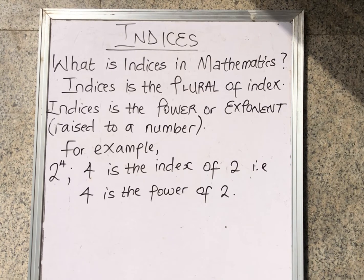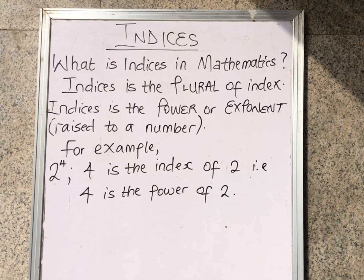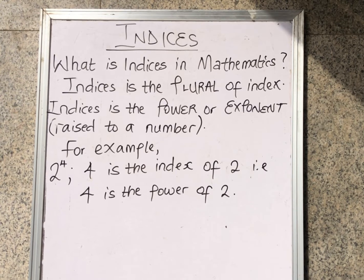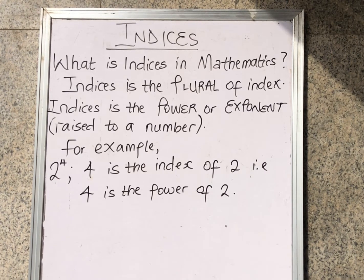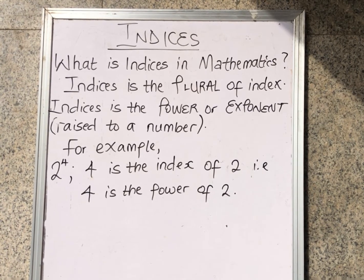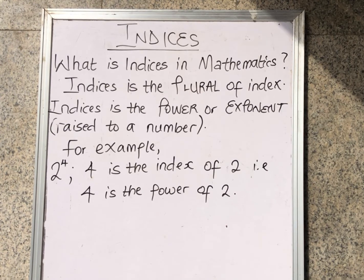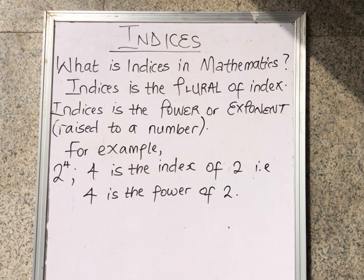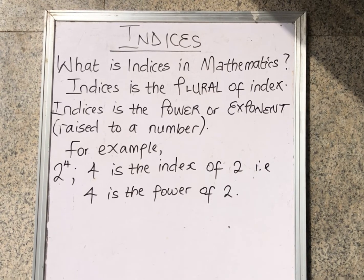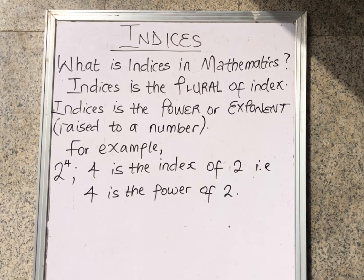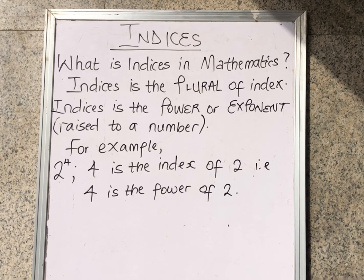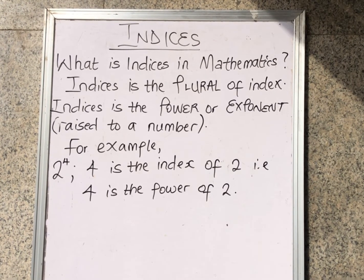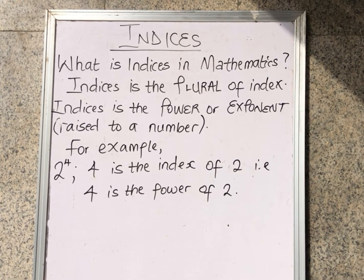Multiply 2 four times: 2 times 2 times 2 times 2. Well, 2 times 2 times 2 times 2 will give you 16. So well done to the person that got 16. Wherever you see a number raised to another number, you know that that is indices and you know what that means.